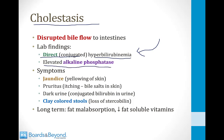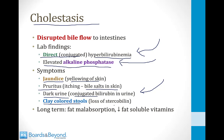Another characteristic finding is elevated alkaline phosphatase. Alkaline phosphatase is synthesized by bile duct epithelial cells, and when there is obstruction to bile flow, the level of this enzyme in the serum will rise. The symptoms of cholestasis include jaundice — yellowing of the skin — which happens when the bilirubin level is high. There is also pruritus, or itching, believed to occur because bile salts deposit in the skin. You can also sometimes see dark urine when conjugated bilirubin levels are elevated. And finally, you can have clay-colored stools, because bilirubin is converted to stercobilin in the intestines, which makes stool dark — if you lose bile flow, you will get pale clay-colored stools.